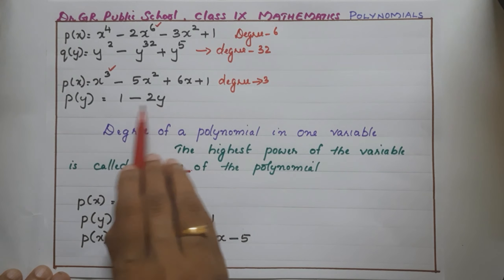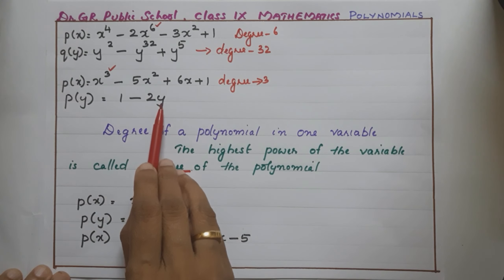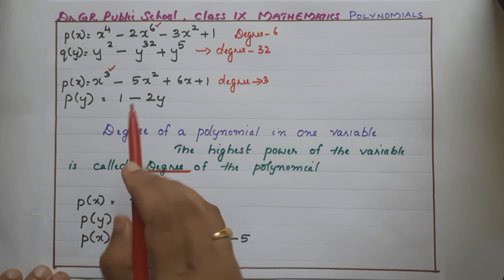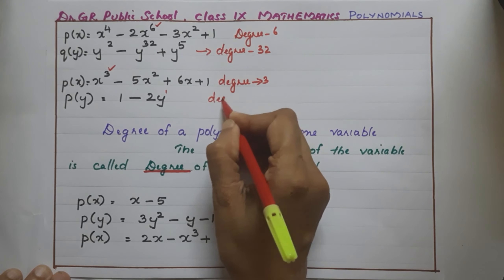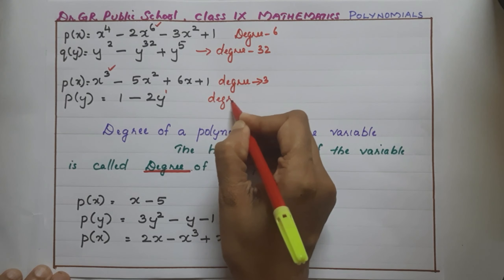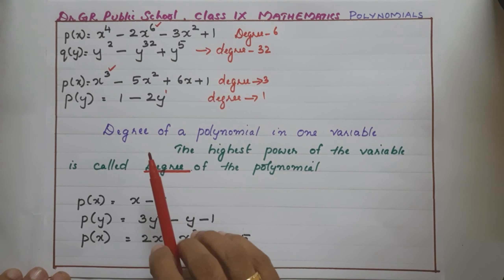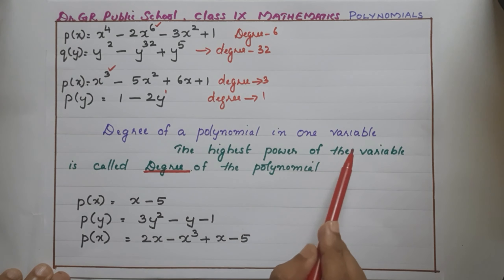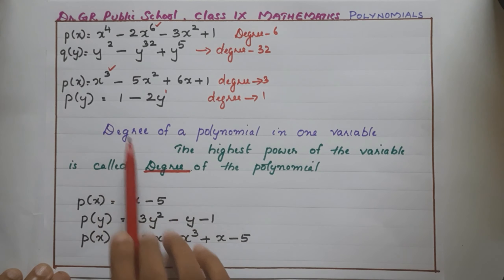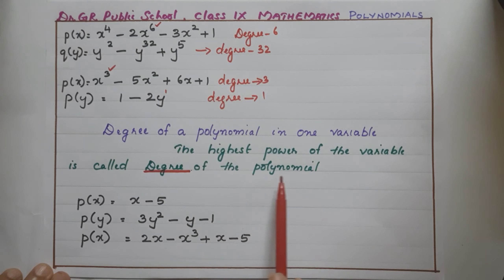And here, what is the degree? The power of y is 1, which is the highest one, so its degree is 1. So, what is the degree of a polynomial in one variable? The highest power of the variable is called the degree of the polynomial.